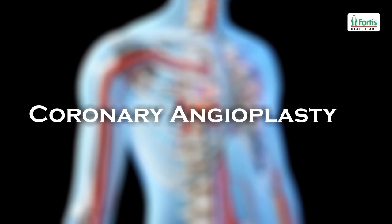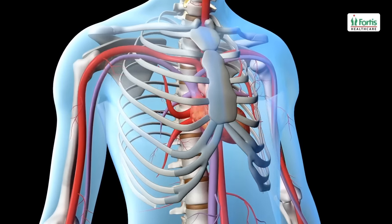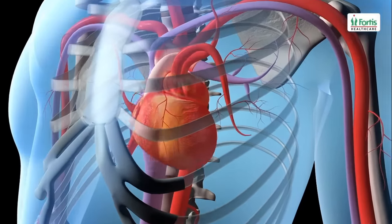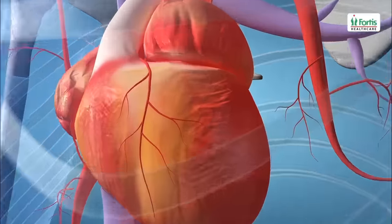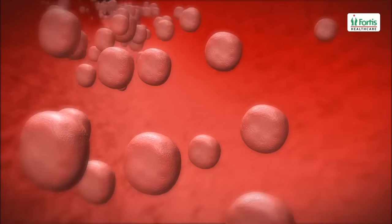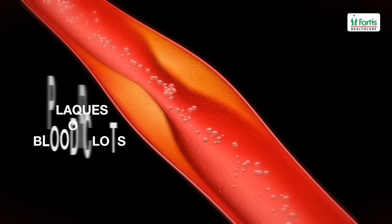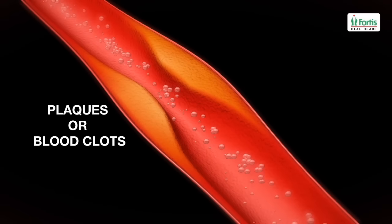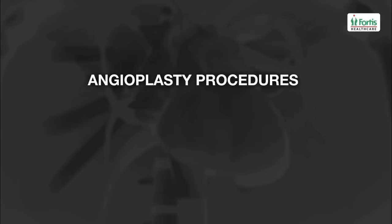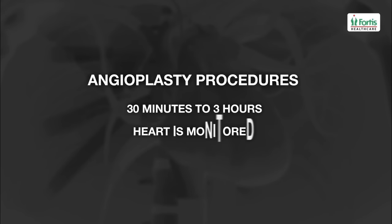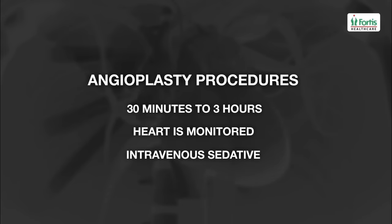Coronary angioplasty, also called percutaneous transluminal or balloon angioplasty, is a treatment procedure to restore blood flow in the narrowed or blocked coronary arteries caused by plaques or blood clots. Most coronary angioplasty procedures last between 30 minutes to 3 hours. Once the patient is admitted, the heart is monitored and the patient is given an intravenous sedative.